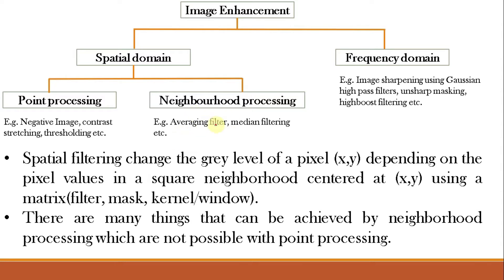Spatial filtering is a neighborhood processing technique and a spatial domain technique in image enhancement. Unlike point processing, where we consider one pixel at a time, in neighborhood processing we consider a pixel and its immediate neighbors. For spatial filtering, we change the gray level of a pixel (x, y) depending on pixel values in a square neighborhood centered at (x, y) using a matrix also known as a spatial filter, spatial mask, spatial kernel, or spatial window.